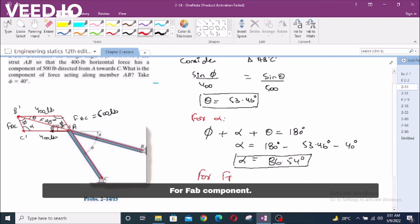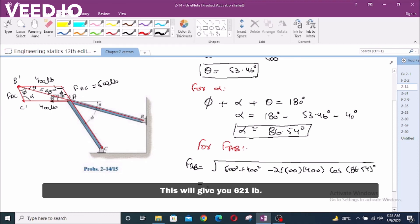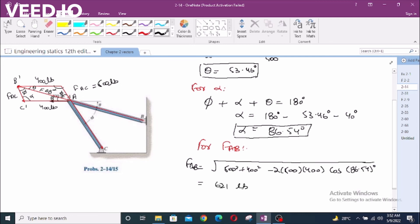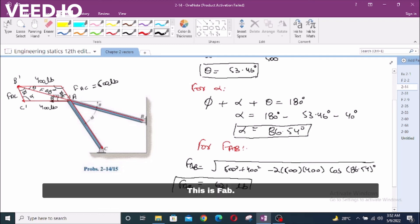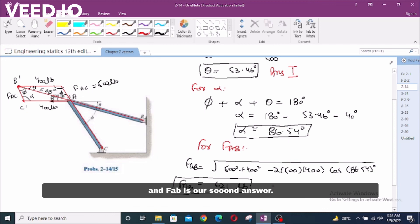For FAB component, we can apply cosine law opposite to the vertex forming the angle alpha. FAB equals square root of 500 squared plus 400 squared minus 2 times 500, 400, cos alpha which is 86.54 degrees. This will give you 621 pounds. This is FAB. Design angle is our first answer. And FAB is our second answer.